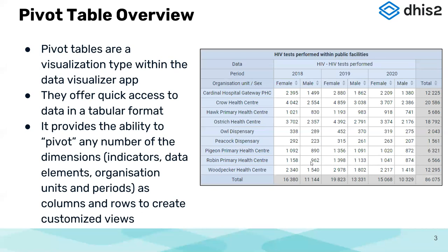Looking at the example pivot table giving information on HIV tests performed, we can clearly see the 'what' — which is the HIV tests performed. We also see the 'when' — the timeframe of these figures, which is 2018, 2019, and 2020. But that doesn't make sense unless we clearly state 'where' these figures are coming from, which is the organization unit or location where this data was captured. You can also see the male and female breakdown — we'll cover how we reach that point of disaggregating information by sex.